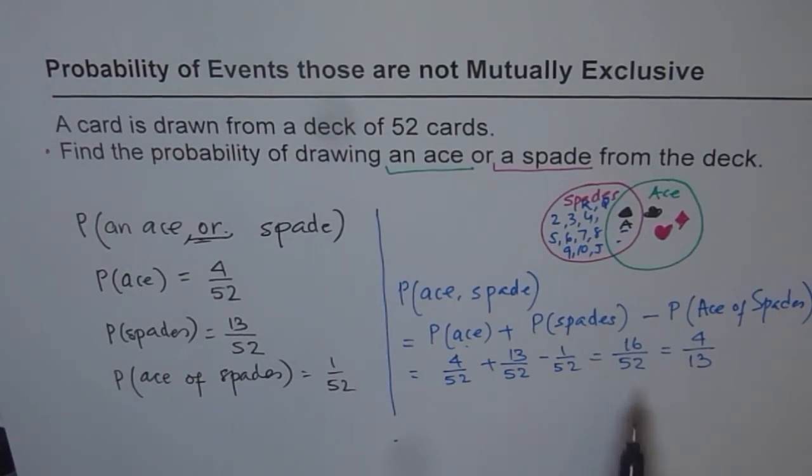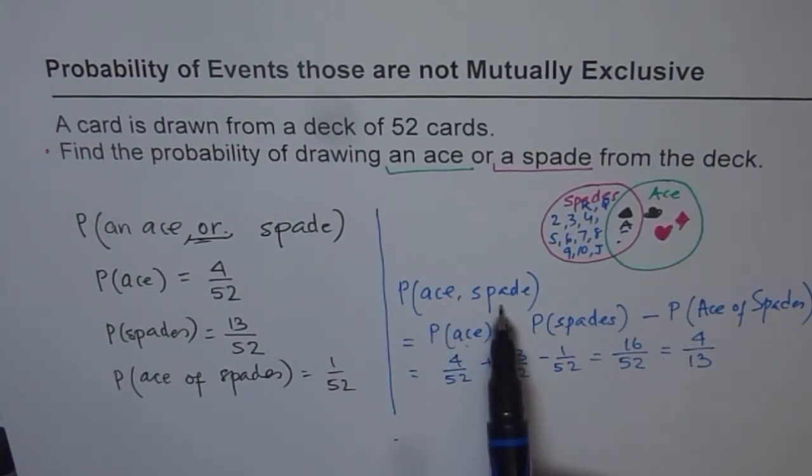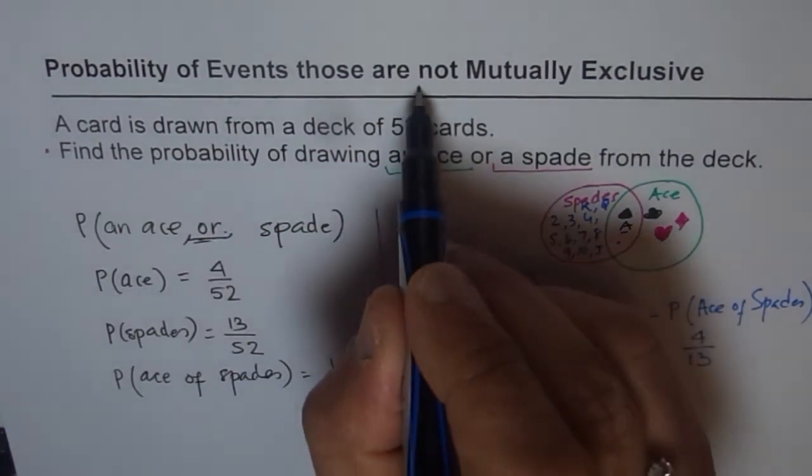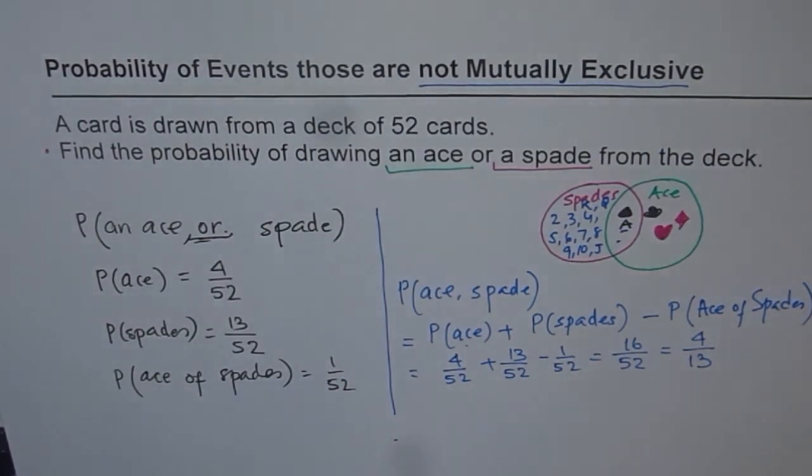So the probability of getting an ace or a card of spades is 4 over 13. So that is how we do questions where we're talking about not mutually exclusive. So we'll do one more example on this and then move on to the next very interesting topic. Thank you and all the best.